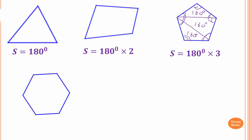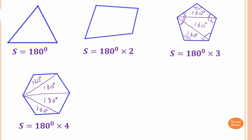Now let's look at the hexagon. Using the same process, I connect from this corner to this corner, and from this to this, creating diagonals. The sum of interior angles gives us 180 degrees for each triangle — 180 here, 180 here, 180 here, and 180 here. So the sum of angles of a hexagon equals 1, 2, 3, 4 triangles — that's 180 times 4, giving the sum of interior angles of a hexagon.